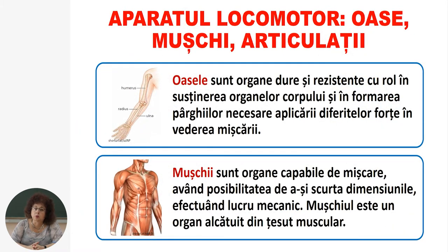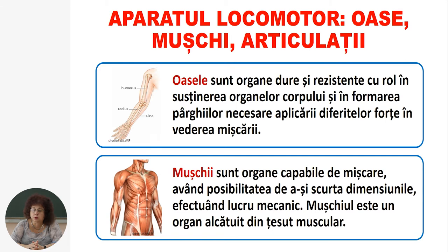Aparatul locomotor include oase, mușchi, articulații. Oasele sunt organe dure și rezistente cu rol în susținerea organelor corpului și în formarea pârghielor necesare aplicării diferitor forțe în vederea mișcării. Mușchii sunt organe capabile de mișcare, având posibilitatea de a-și scurta dimensiunile, efectuând lucrul mecanic. Mușchiul este un organ alcătuit din țesut muscular.